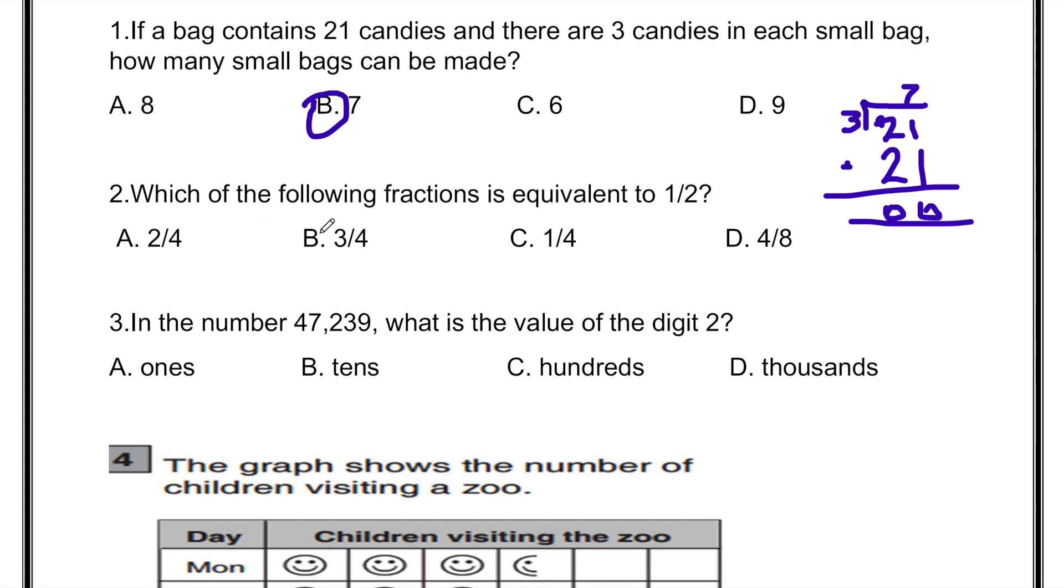Which of the following fractions is equivalent to 1 by 2? To find the equivalent fractions, we multiply the fraction by the same number. So first we multiply 1 times 2 and then 2 times 2. 1 times 2 is 2 and 2 times 2 is 4. So the answer is option A.